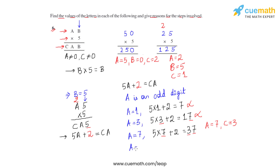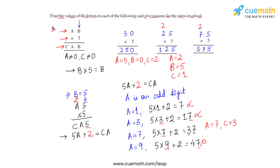The final odd value to check is a equals nine. We get 5 times 9 plus 2 equals 47; on the left a is nine but on the right the ones digit is seven — these differ, so a equals nine is not valid. Recording the third set of values: a equals seven, b equals five, and c equals three.